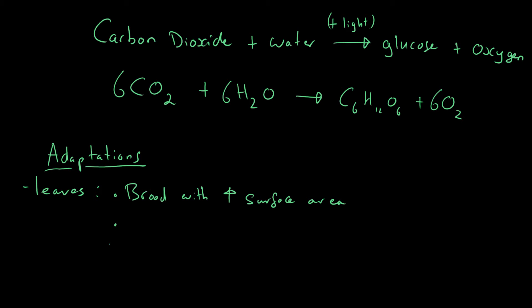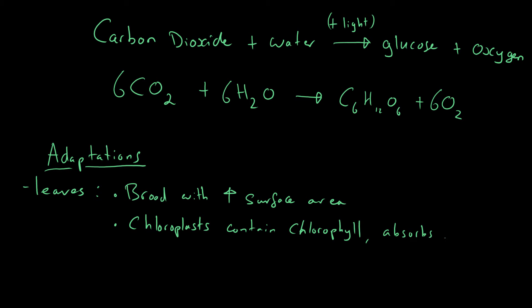What do they also contain? As mentioned in the last video on cells, the plant cells contain chloroplasts. Chloroplasts contain the pigment chlorophyll. Chlorophyll absorbs the sunlight — that's why photosynthesis happens at the chloroplasts, because the chlorophyll absorbs the light energy.